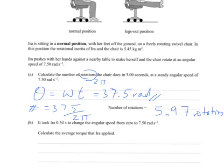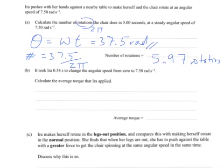Moving on to part B: It took 0.54 seconds to change the angular speed. This is sounding like kinematic equations in a rotation version. Change the angular speed from 0 to 7.5, so calculate the average torque that Ira applied.